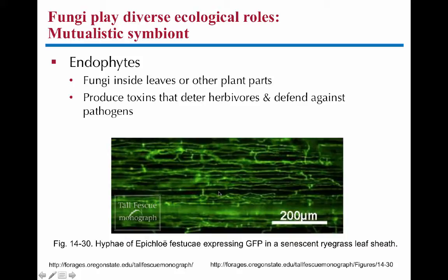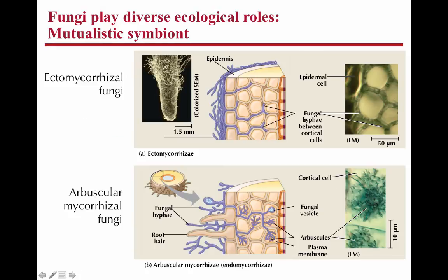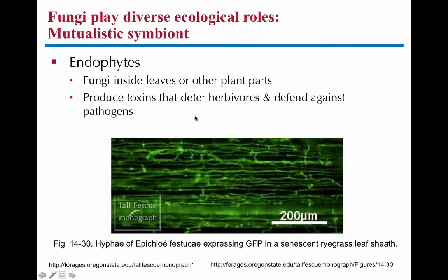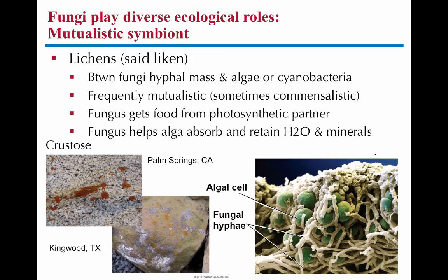Mutualistic symbionts also include endophytes — fungi that live inside plant tissue, visible here as GFP-producing fungus inside a plant leaf. Endophytes promote growth, and plants without their endophytes or mycorrhizal fungi — such as when treated with antifungals — often die or grow poorly. Endophytes are also useful because they produce toxins that deter herbivory and defend against pathogen infections, protecting the plant from being eaten or diseased.